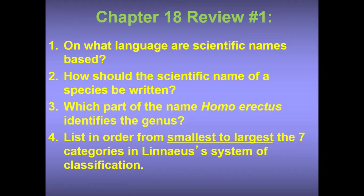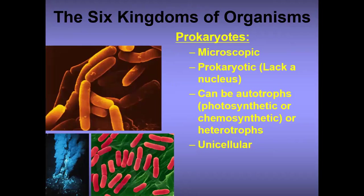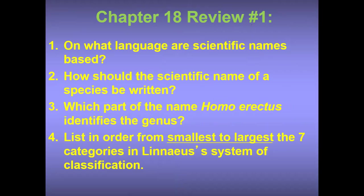Now let's review. Answer these questions in your books. One: on what language are scientific names based? Two: how should the scientific name of a species be written? Three: which part of the name Homo erectus identifies the genus? Four: list in order from smallest to largest the seven categories in Linnaeus's system of classification. Pause the video, write the questions down, copy the answers into your books, and submit them.